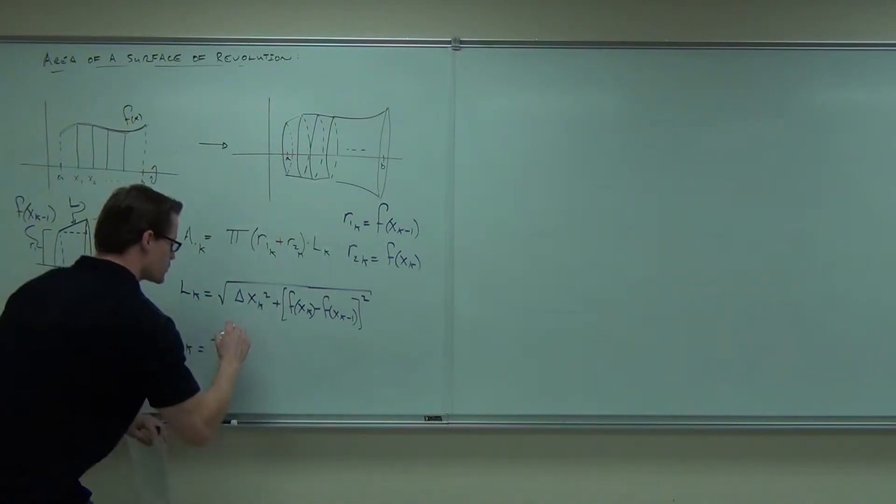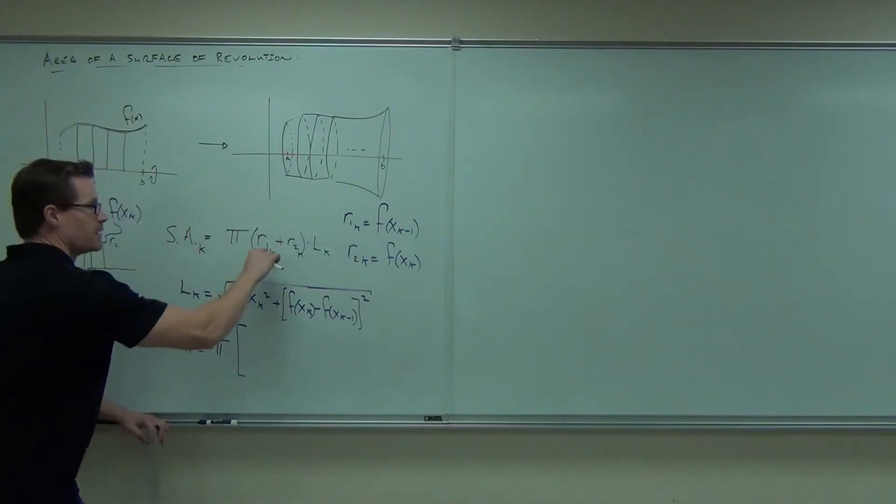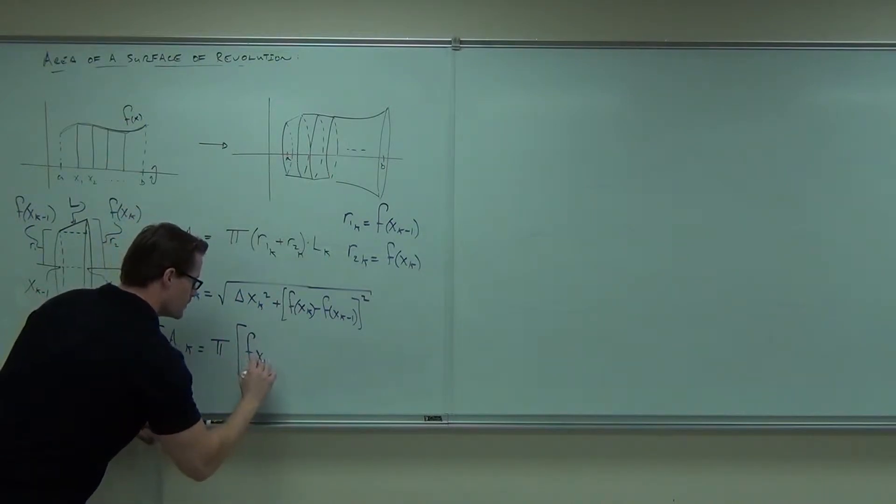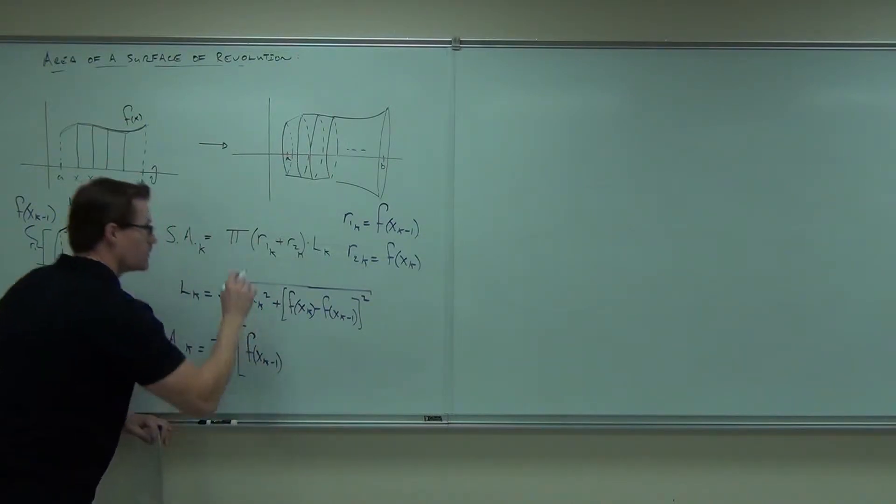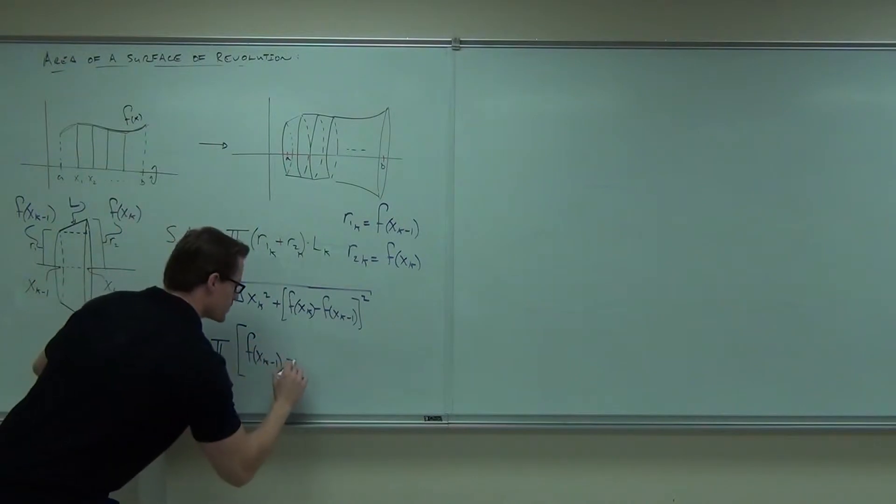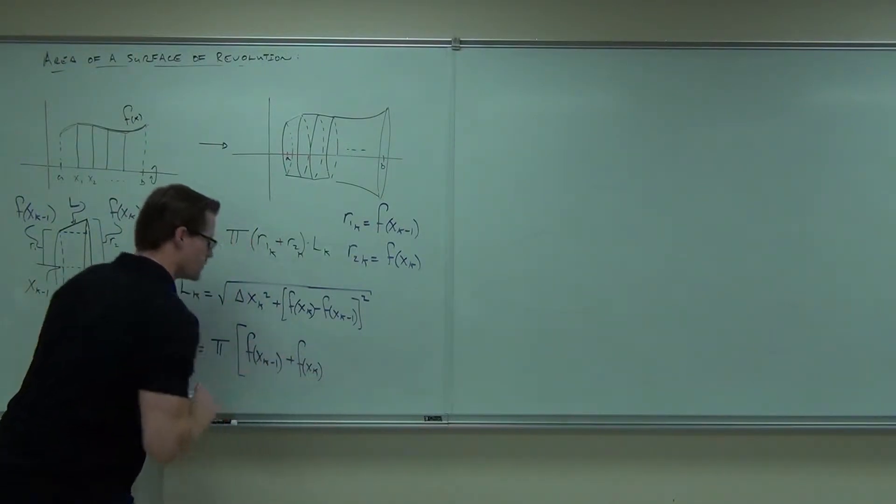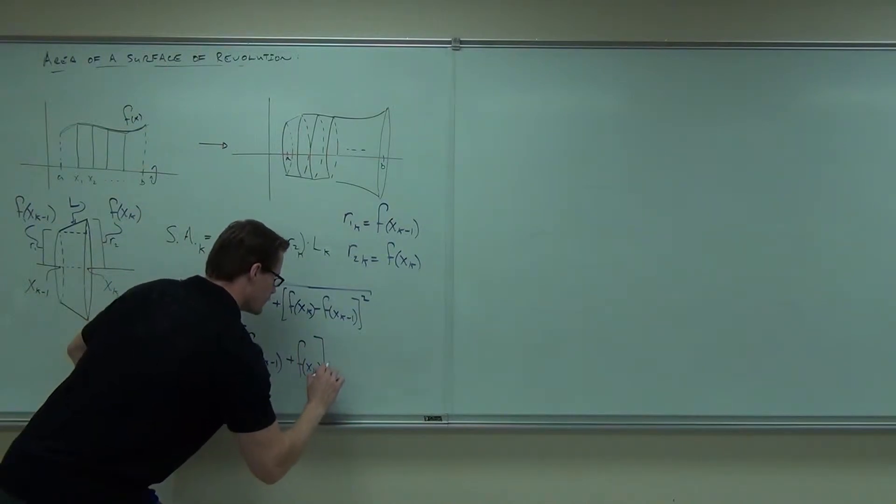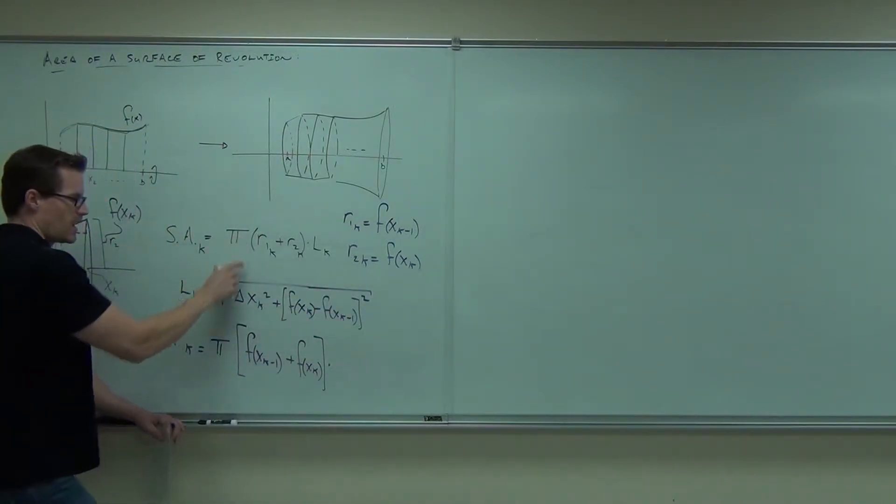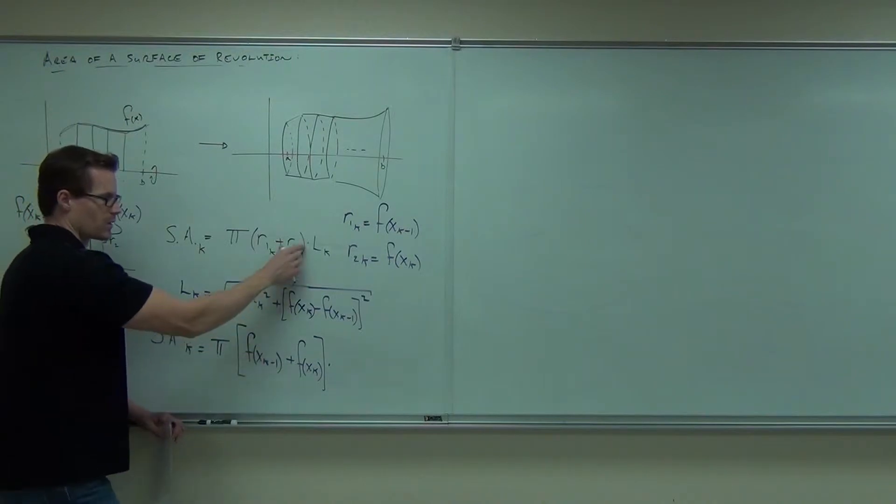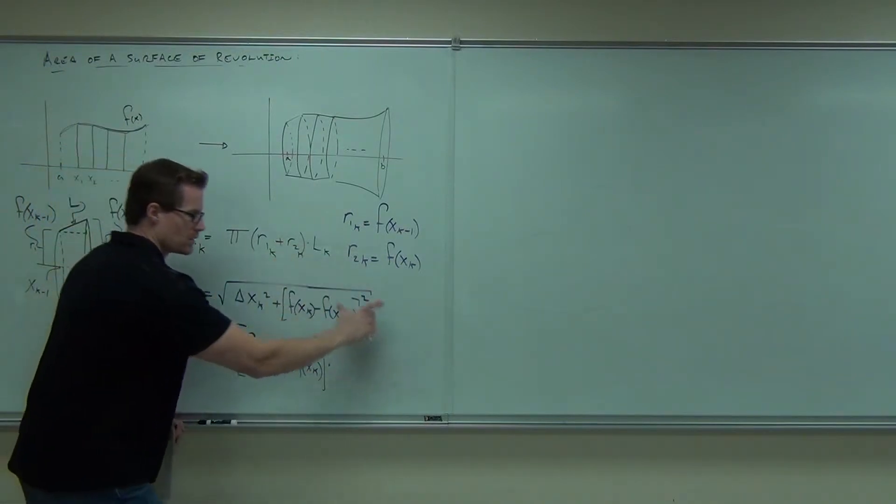So during our substitution, we've got r1 sub k plus times all of l sub k. We have pi, r1, r2, and l.